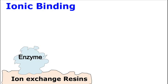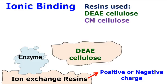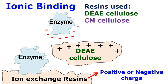Ionic binding of enzymes can be carried out using ion exchange resins. These materials have a positive or negative charge depending on the pH. The most common ion exchange materials used are DEAE cellulose or CM cellulose. DEAE cellulose has a positive charge and can interact with enzymes having a negative charge.